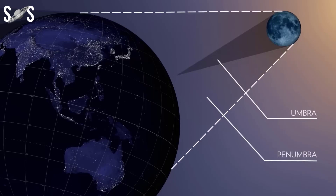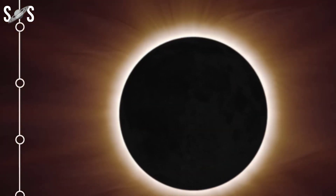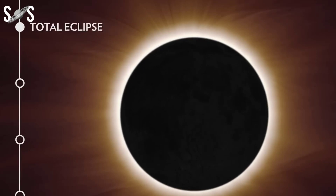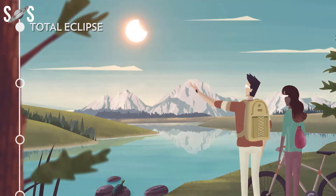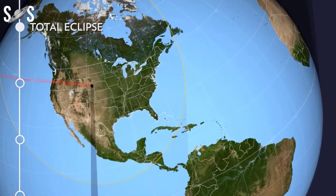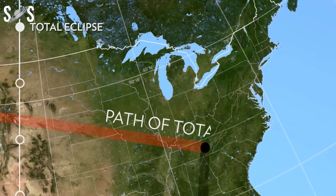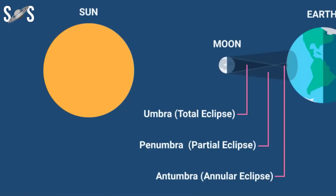Since the moon's umbra and antumbra are always surrounded by a penumbra, both total and annular solar eclipses look like partial solar eclipses if you are just outside the path of the central shadow. What is special about hybrid eclipses is that the full eclipse looks different depending on your location. Some observers along the central shadow's path see it as a total solar eclipse with an eclipse magnitude greater than 1, while others experience it as an annular eclipse with a magnitude below 1. For this reason, hybrid eclipses are also called annular/total eclipses.